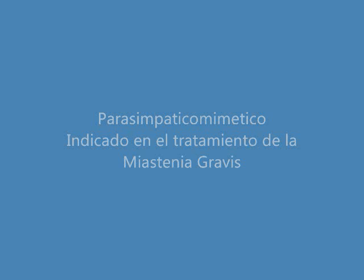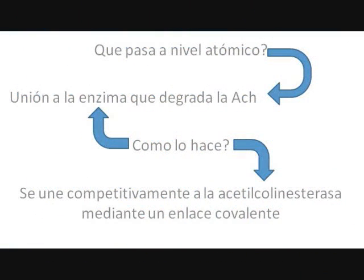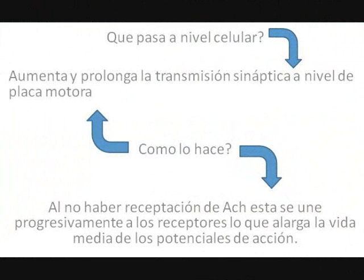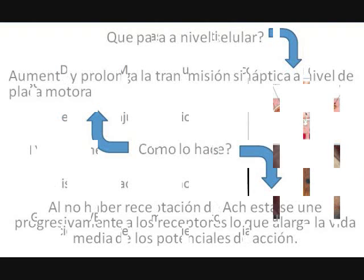La piriditismina es un fármaco parasimpático mimético que inhibe la acetilcolinesterasa, lo que resulta en una acumulación del transmisor en la hendidura sináptica. Se une a la enzima que degrada la acetilcolina mediante un enlace covalente y por lo tanto la inhibe. A nivel de placa motora, aumenta y prolonga la transmisión sináptica progresivamente, alargando la vida media de los potenciales de acción.